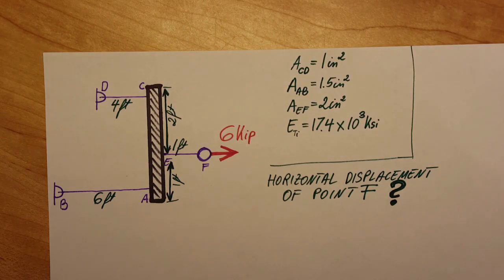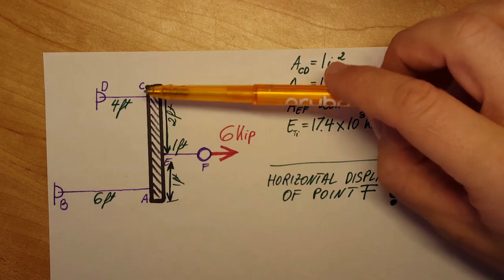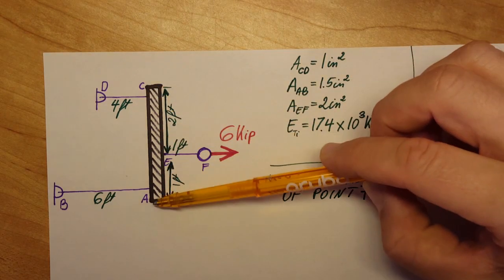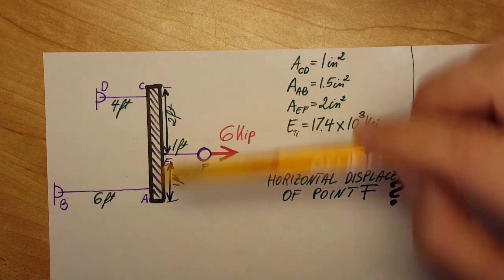This is a strength of materials video. We are looking at an assembly that consists of three titanium bars, and we also have another bar AC which is a rigid bar.